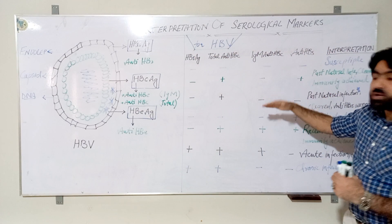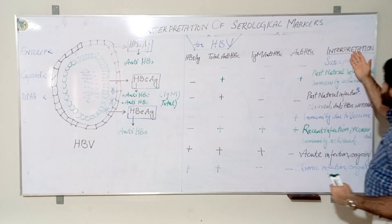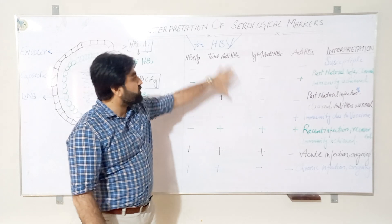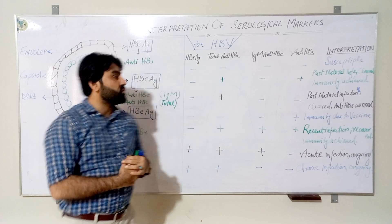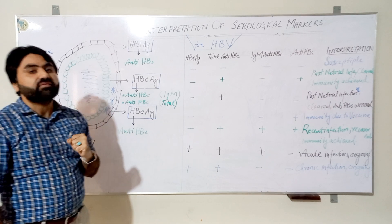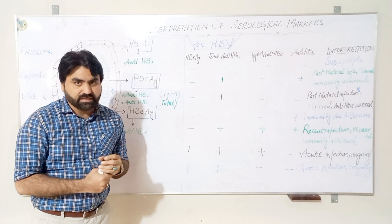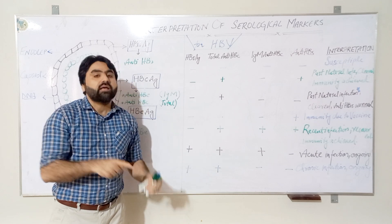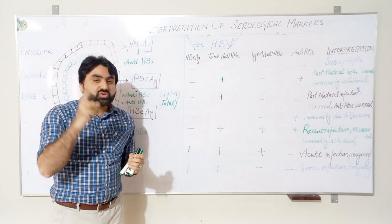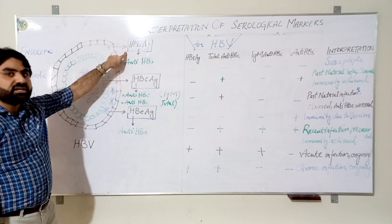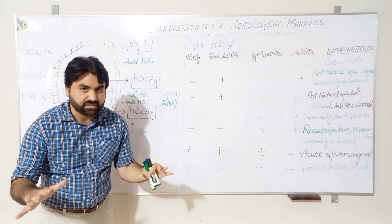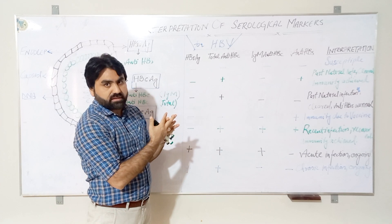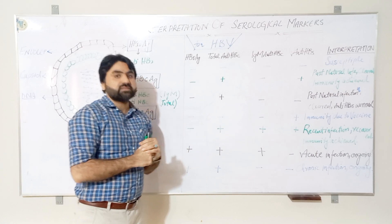Before interpreting the table, note that HBsAg is the hallmark of hepatitis B virus infection. The presence of HBsAg always indicates the presence of the virus inside the body. Whenever HBsAg is present, the person is infected — whether acute, chronic, or another phase — which is decided after combining other serological markers.